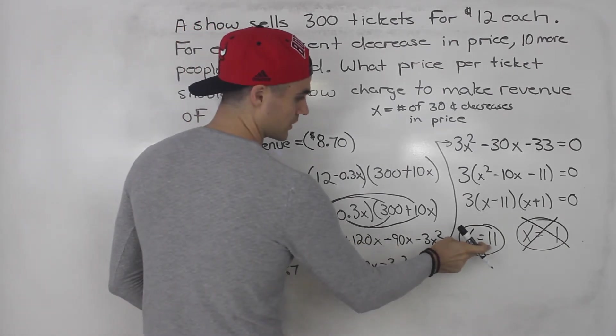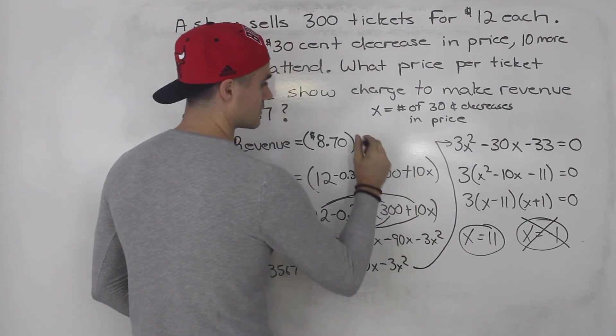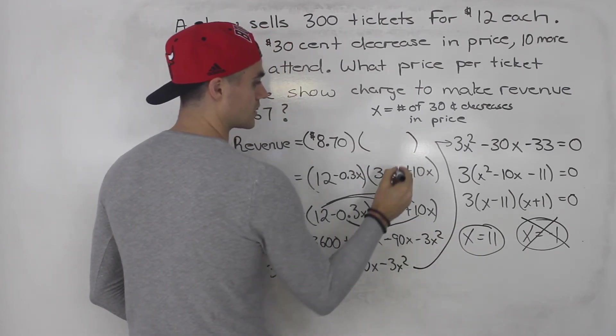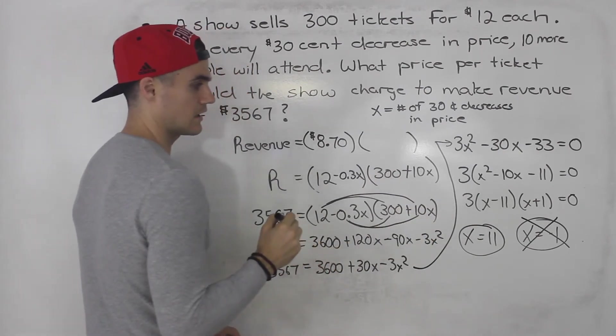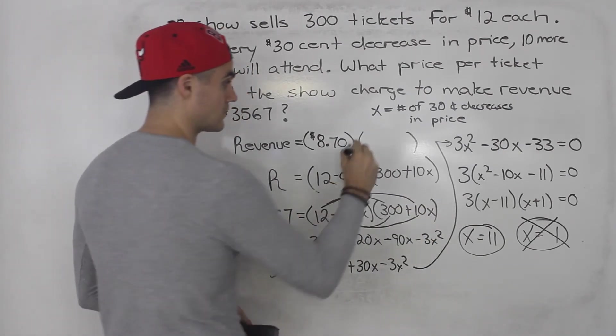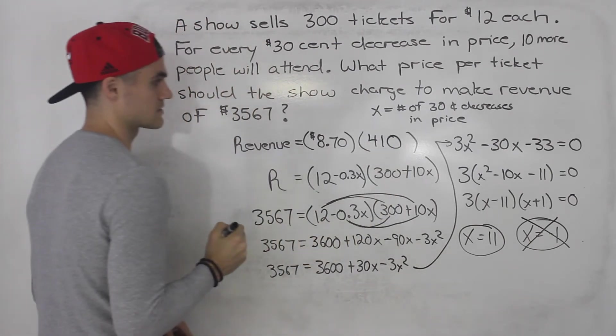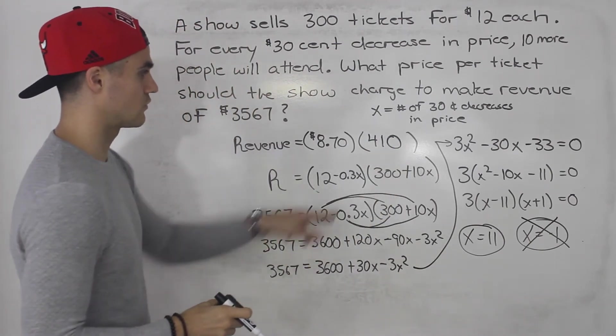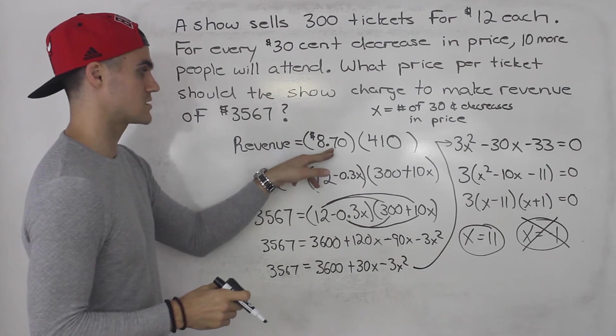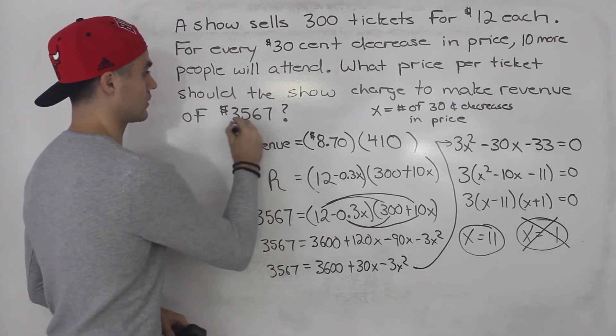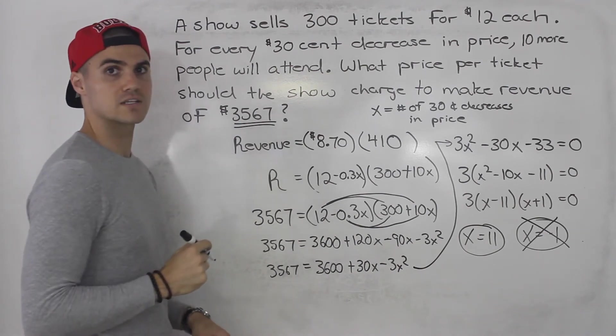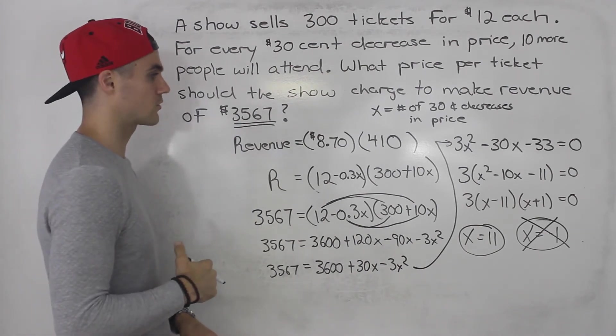And then to check your answer, you could plug in this x value of 11 here. That's the number of tickets that are going to be sold. So 300 plus 10 times 11 is 300 plus 110, which is 410 tickets. And you could actually check your answer. 410 times 8.7 should give you the revenue that you're looking for, 3,567. That's how you know you got the correct answer.